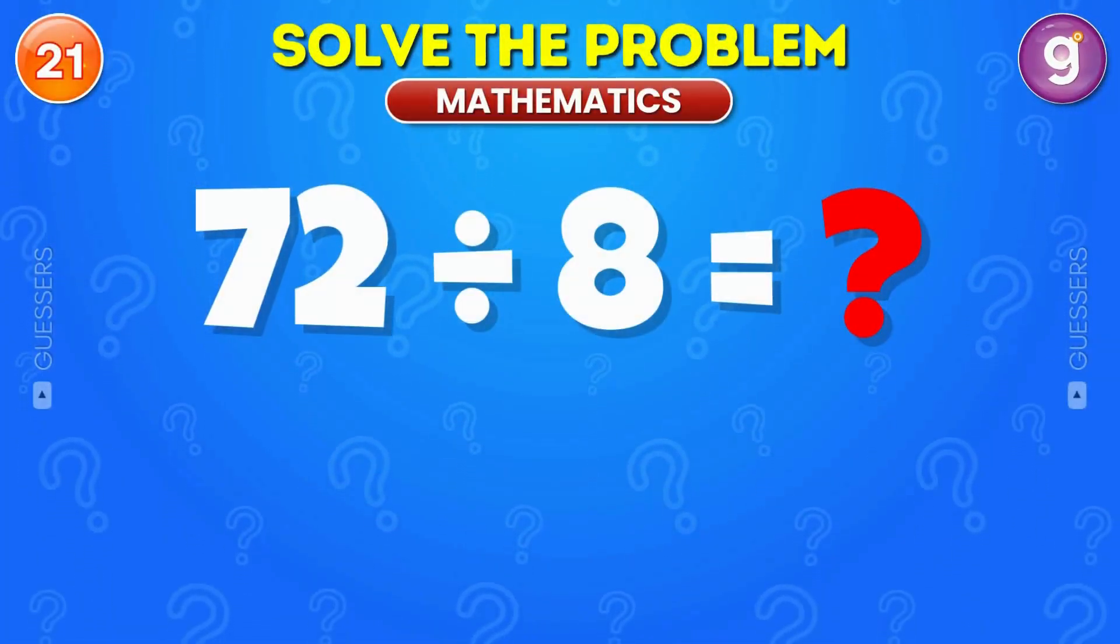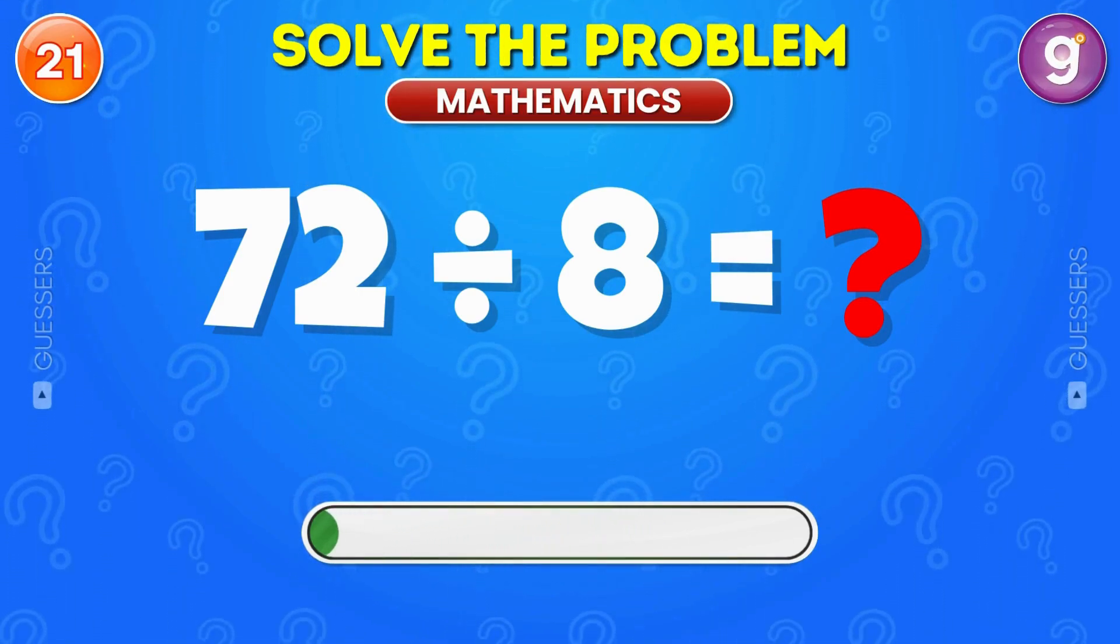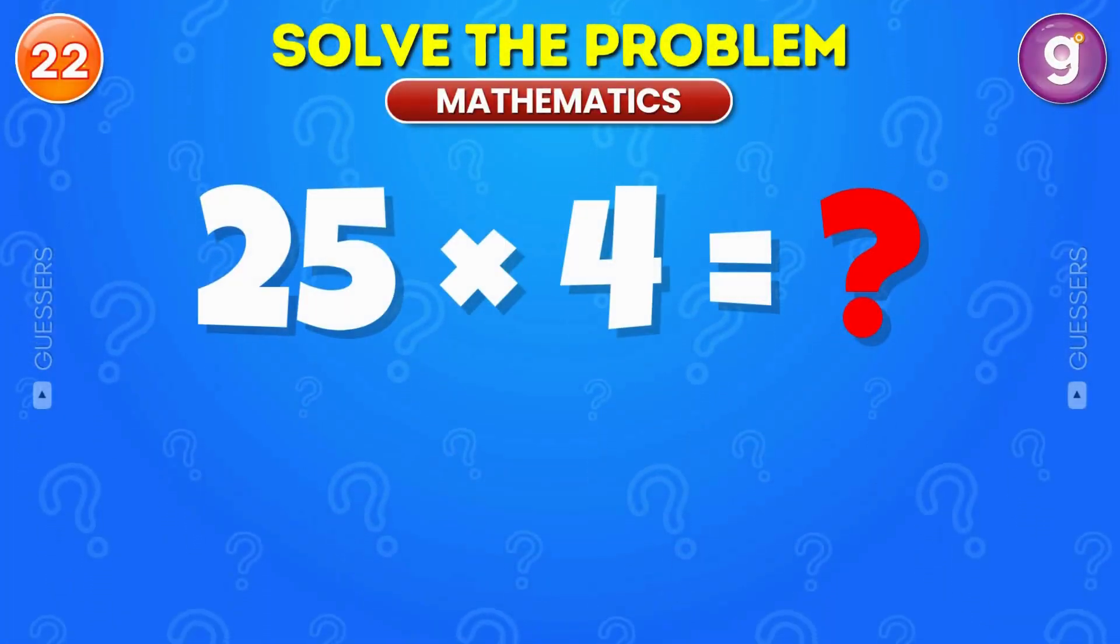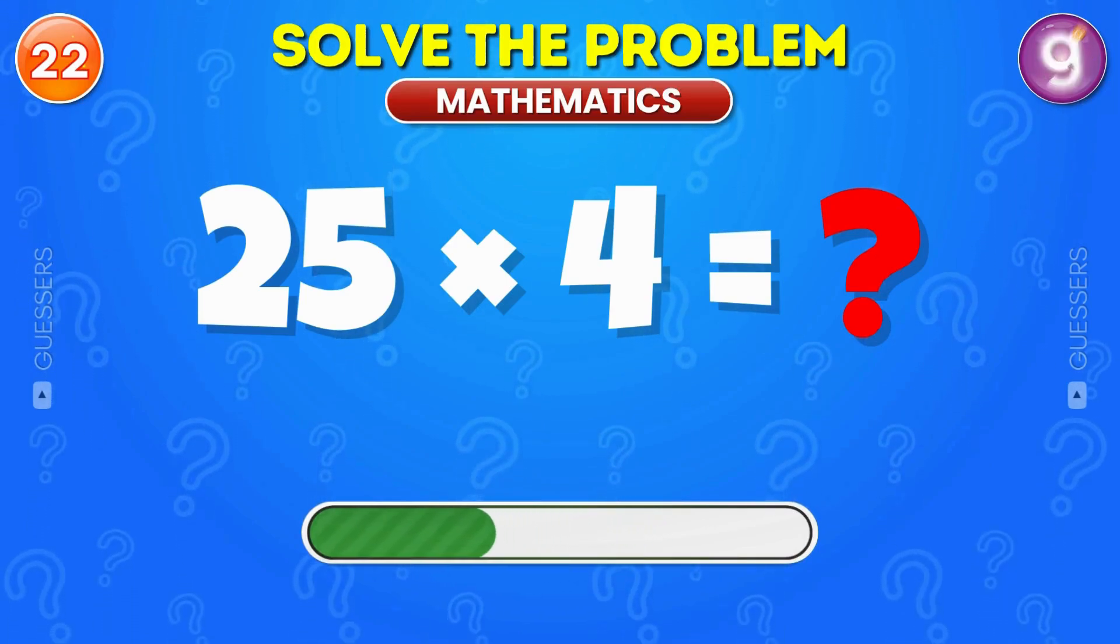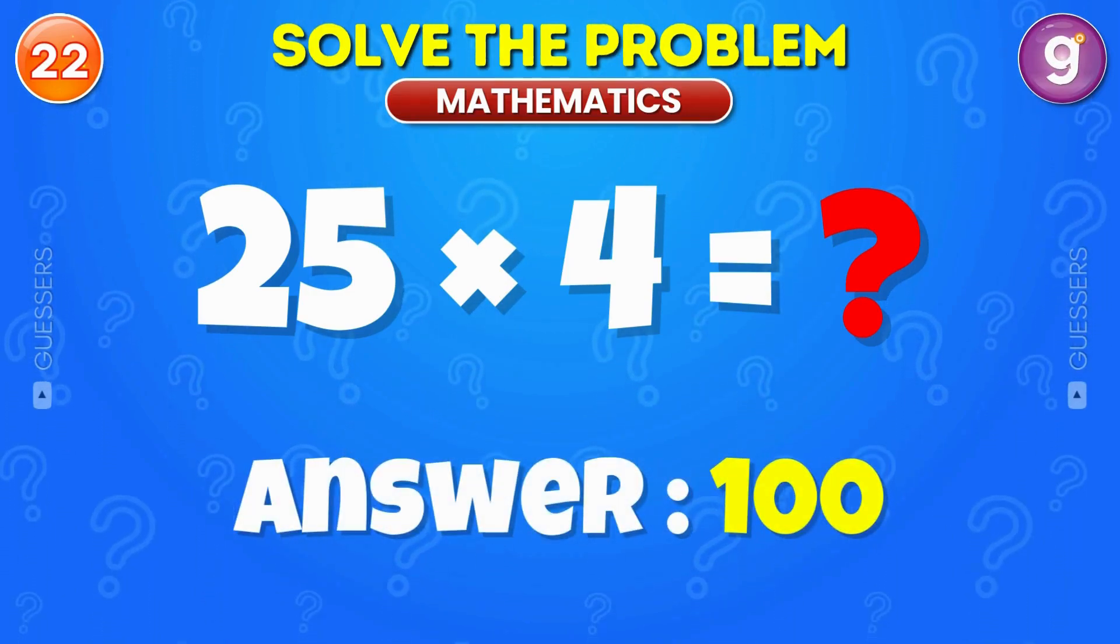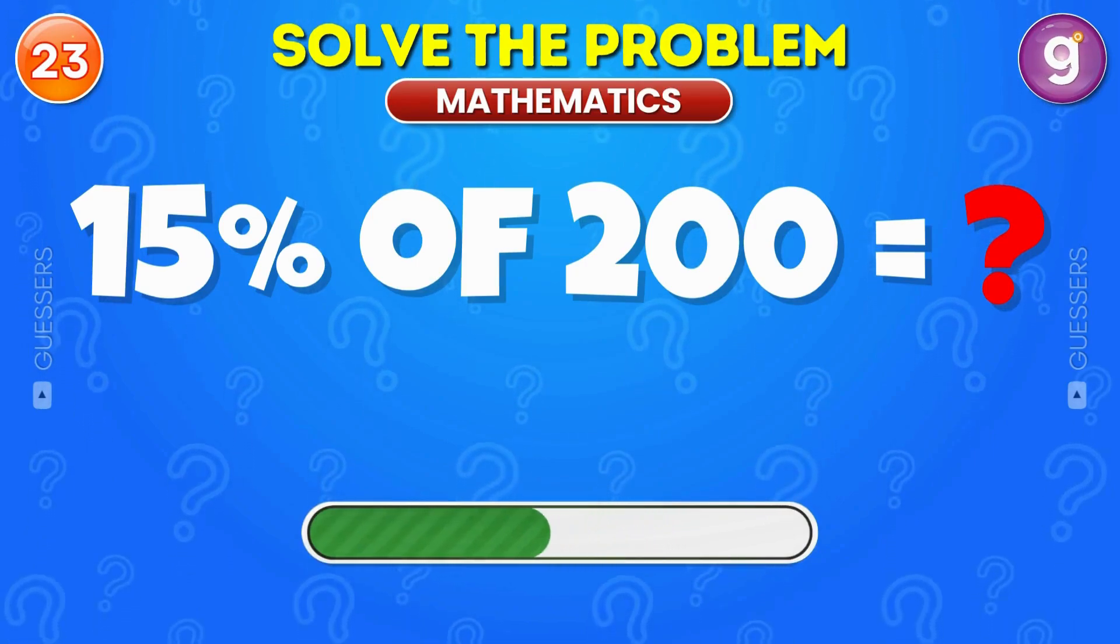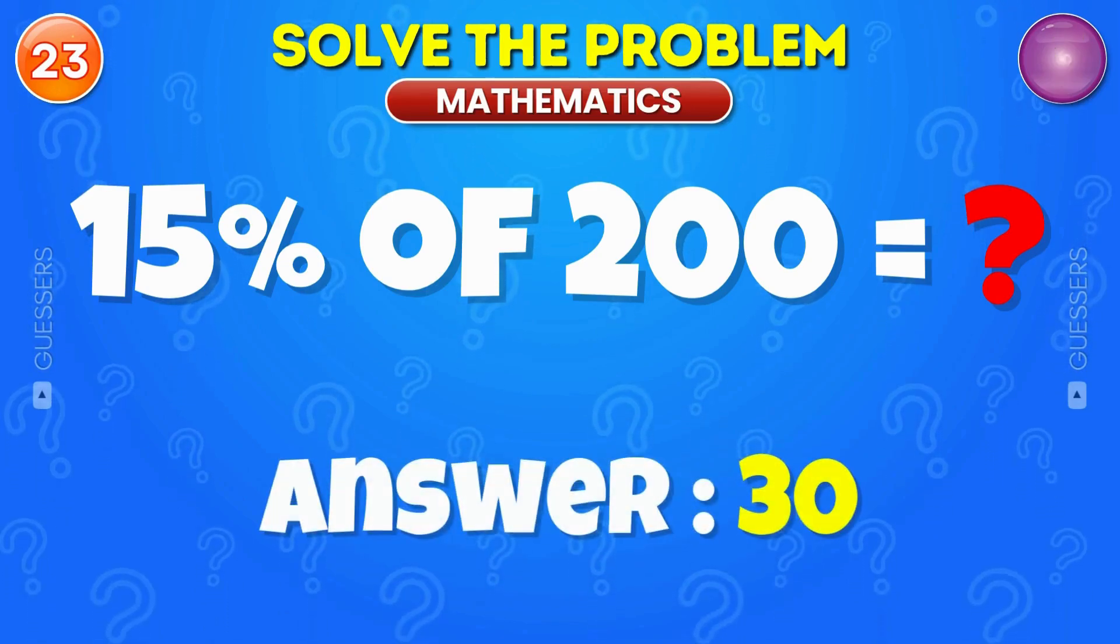Divide 72 by 8. The answer is 9. Multiply 25 by 4. The answer is 100. Find 15% of 200. It's 30.